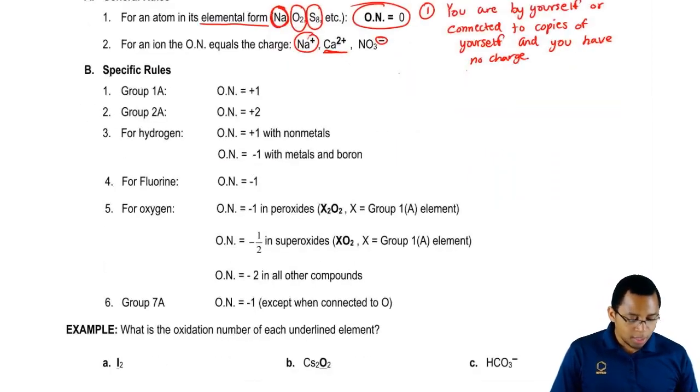Our specific rules: group 1A plus one, group 2A plus two, based on the charge distributions that we learned earlier.